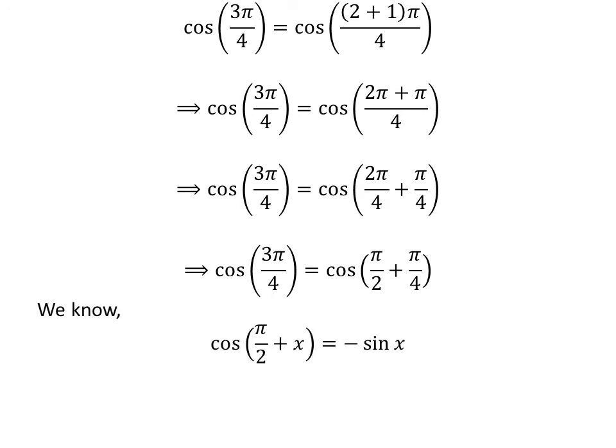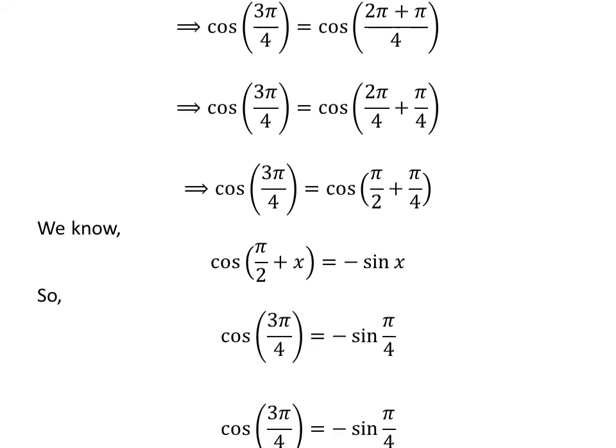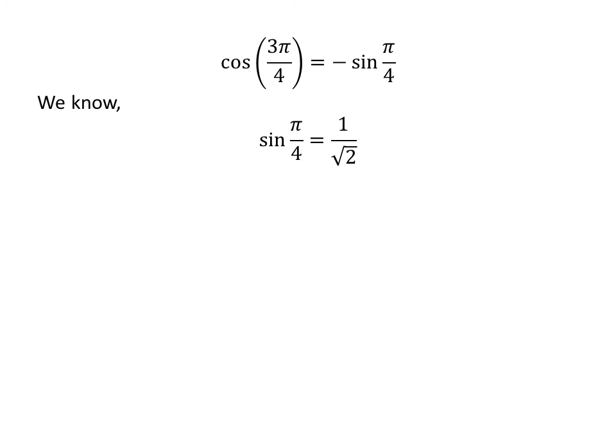We know the famous trigonometry identity: cosine of pi upon 2 plus x is equal to minus sine of x. The proof of this identity has been explained in the video appearing in the upper right corner of this video; the link is also given in the description section. Application of this identity gives us cosine of 3 times pi upon 4 is equal to minus sine of pi upon 4. We know sine of pi upon 4 is equal to 1 upon square root of 2. So cosine of 3 times pi upon 4 is equal to minus 1 upon square root of 2.